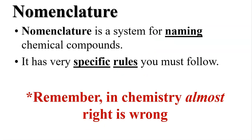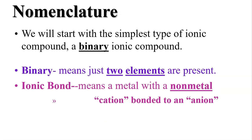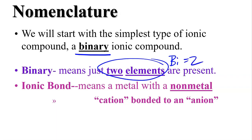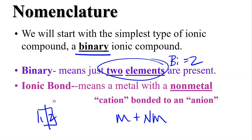Nomenclature is a system for naming chemical compounds, and it has very specific rules you must follow. Remember, in chemistry, almost right is wrong. We're going to start with the simplest type of ionic compounds — your binary ionic compounds. Binary just means two elements are present, so bi equals two. If you bisect something, you cut it in half to create two parts. An ionic bond means it's a metal with a nonmetal, M plus NM, or a cation bonded to an anion.